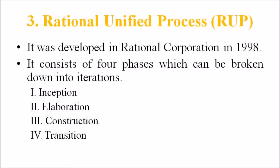The third type is the Rational Unified Process, or RUP, developed by the Rational Corporation in 1998. It consists of four phases which can be broken down into iterations: inception, elaboration, construction, and transition. Each iteration consists of nine work areas called disciplines, and a discipline depends upon the phase in which the iteration is taking place. For each discipline, RUP defines a set of artifacts (work products), activities (work undertaken on artifacts), and roles (the responsibilities of members of the development team).